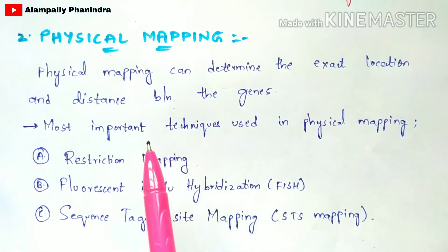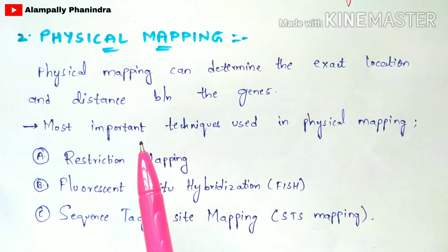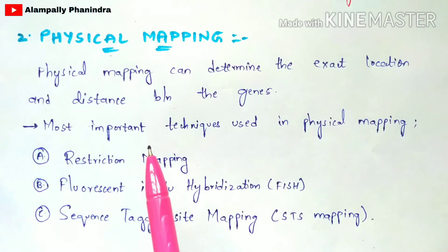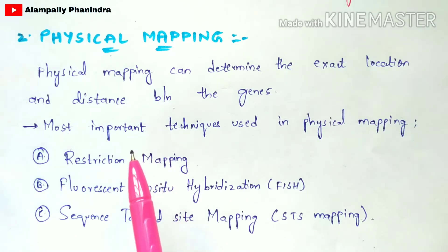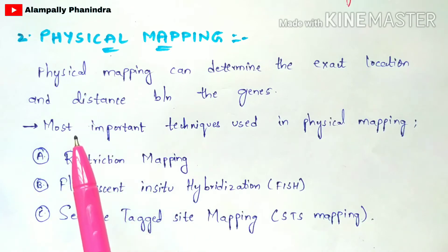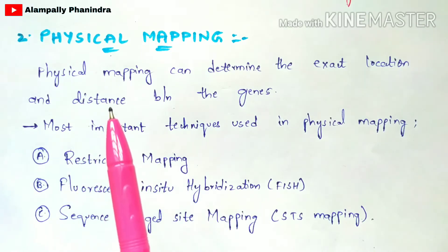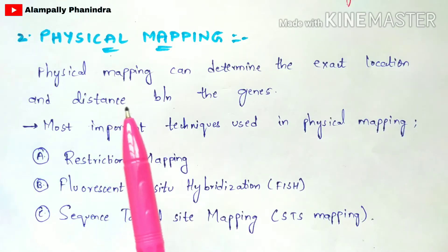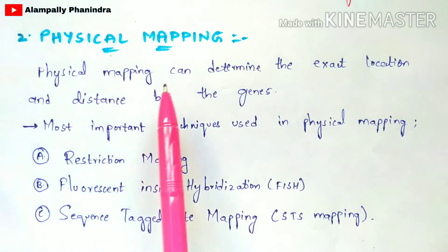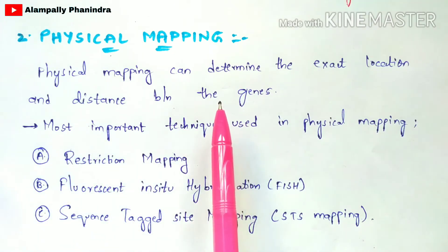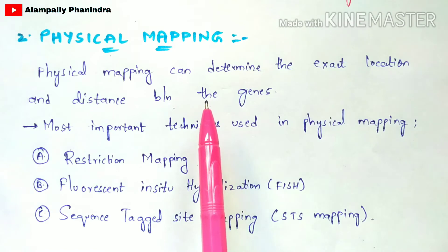Linkage mapping is mainly used to determine the location of one gene corresponding to the other gene, but the exact location as well as the distance between both genes cannot be determined using linkage mapping. By using physical mapping, we can determine the distance present between both genes and we can also determine the locus — the location of the gene — on the chromosomes.